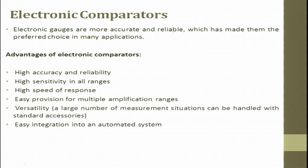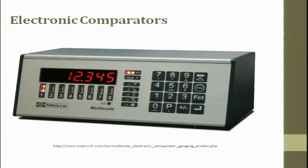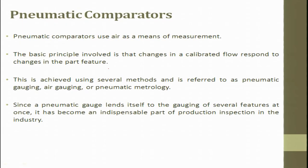Electronic gauges are more accurate and reliable, making them the preferred choice in many applications. They are highly accurate, reliable, and highly sensitive — in terms of speed they easily provide multiple amplification, are versatile, a large number of measurement situations can be handled with standard accessories, and they can be easily integrated into any automated system. You can set values and also see the displacement on the display, which shows readings to the third decimal point. The next topic of discussion is going to be pneumatic comparator.